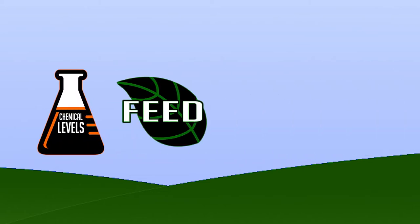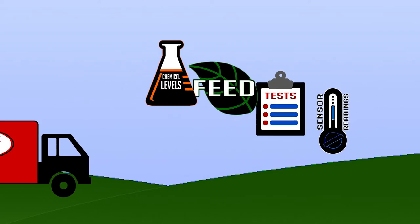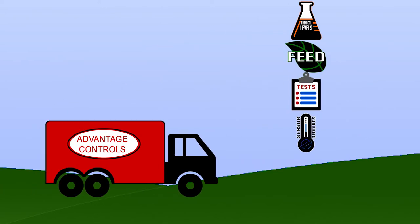From chemical levels to feed verification, test results, and sensor readings. If only there were a company out there who made easy-to-use control systems that could record history and events in your water system and alarm remotely when something went wrong.